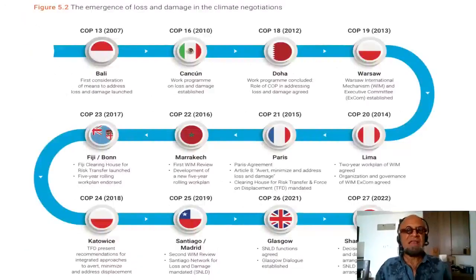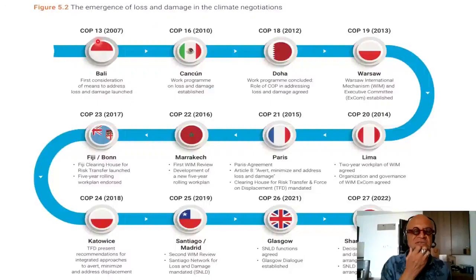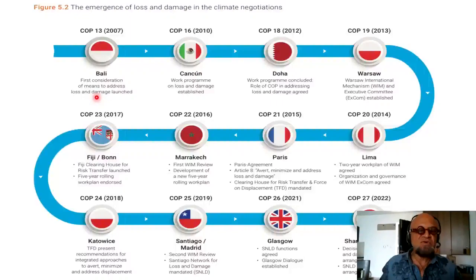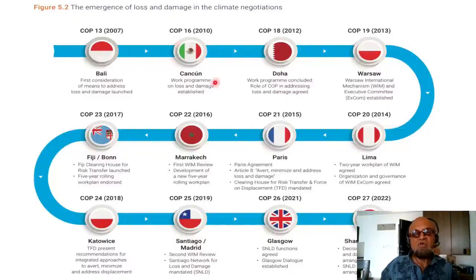The emergence of loss and damage in the climate negotiations started around COP13 in 2007, where the first consideration of means to address loss and damage was launched. At COP16 in Cancun in 2010, a work program on loss and damage was established. At COP18 in 2012 in Doha, the work program was concluded and the role of the COP in addressing loss and damage was agreed.